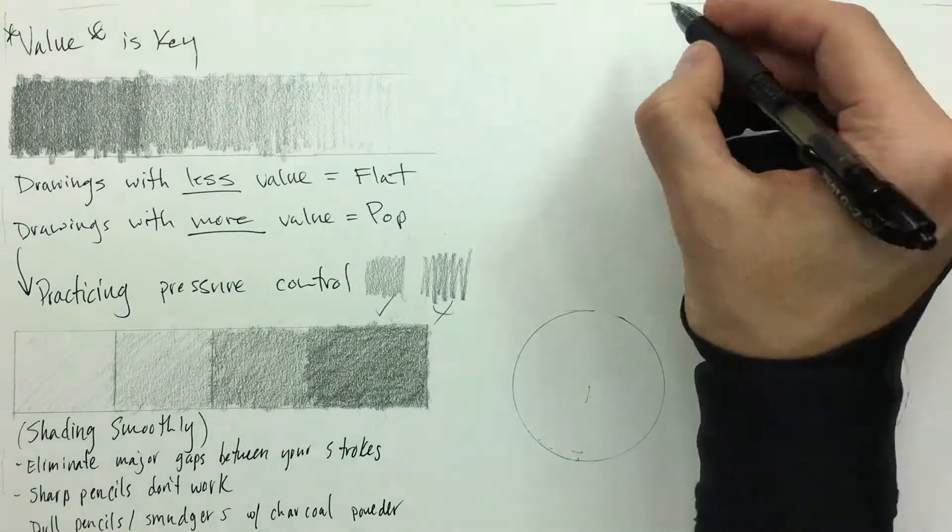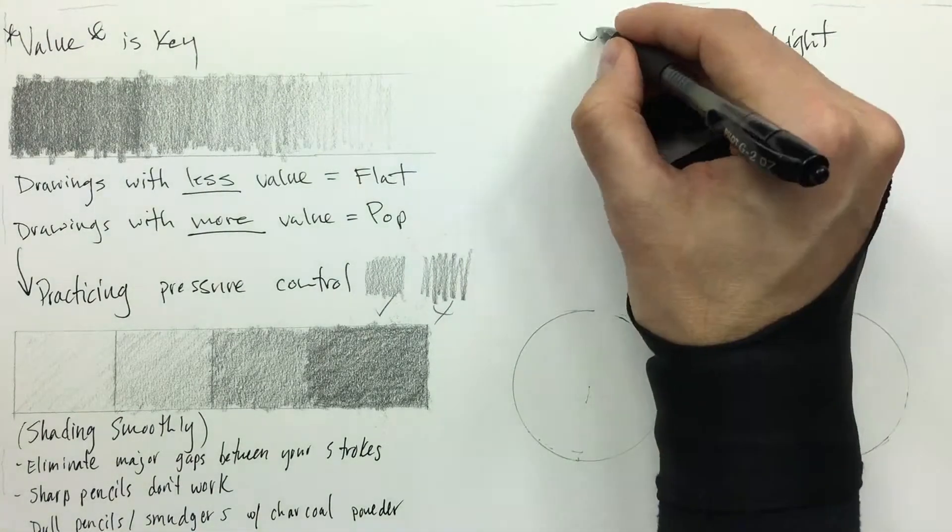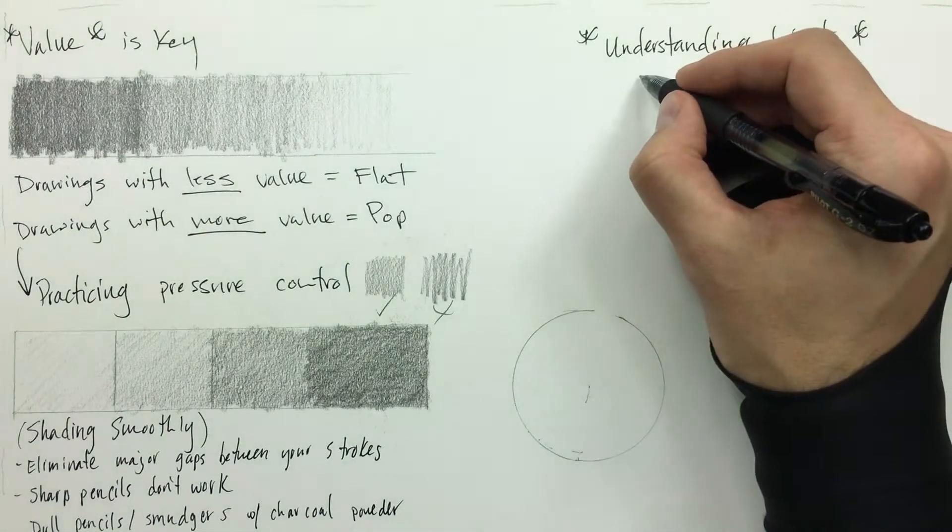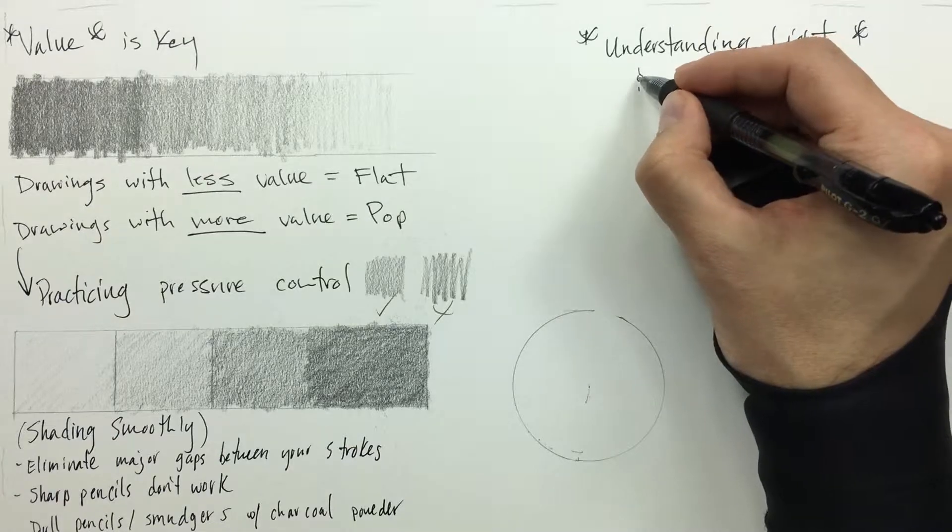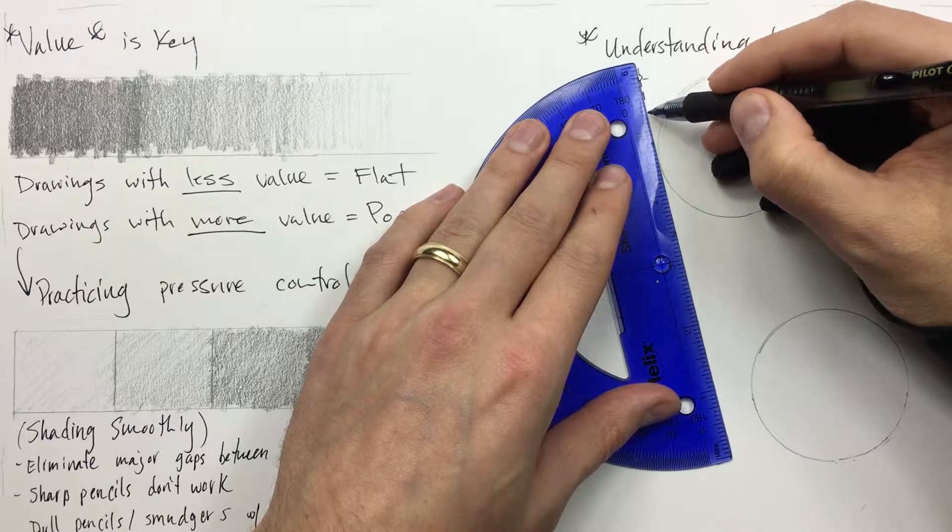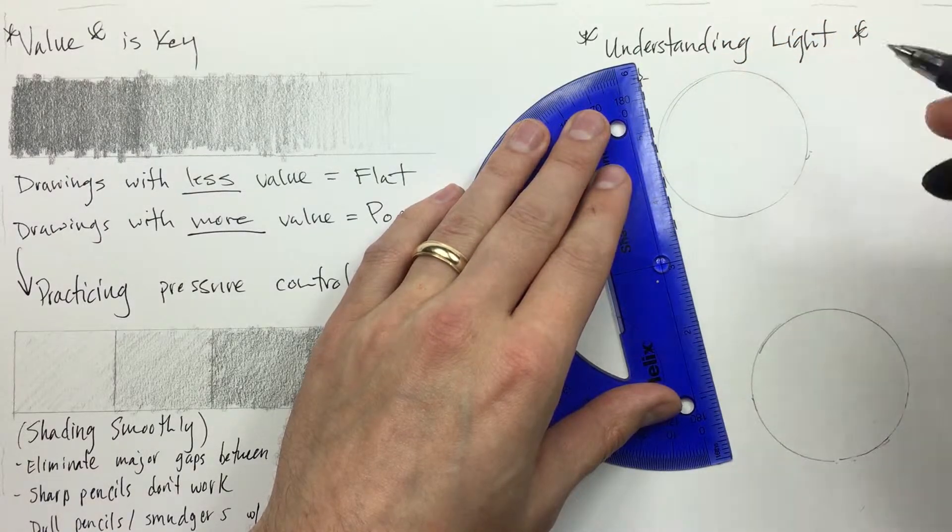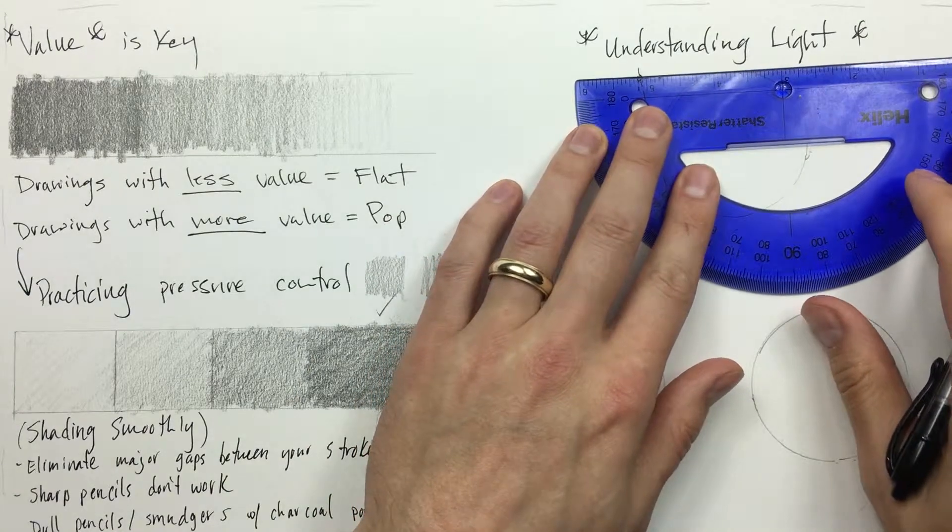Okay so next is understanding light. What we're going to do is I'm going to put our light source here and we're going to draw out how this light is going to interact with our basic shape of our circle here.